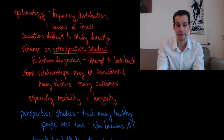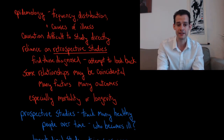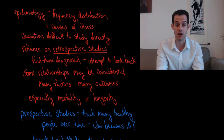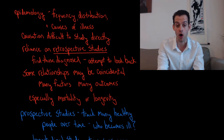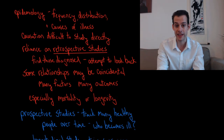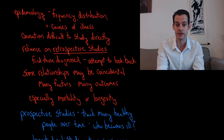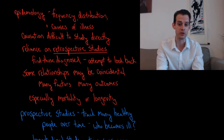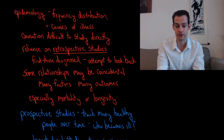In epidemiological studies, one of the main challenges is that it's very difficult to establish causation. The reason for this is that we can't experimentally cause particular illnesses — it would be unethical to give people things that we think are going to cause an illness. So we might think that a certain factor is associated with an illness, but we can't manipulate that and expose people to it in order to see if they develop the illness.